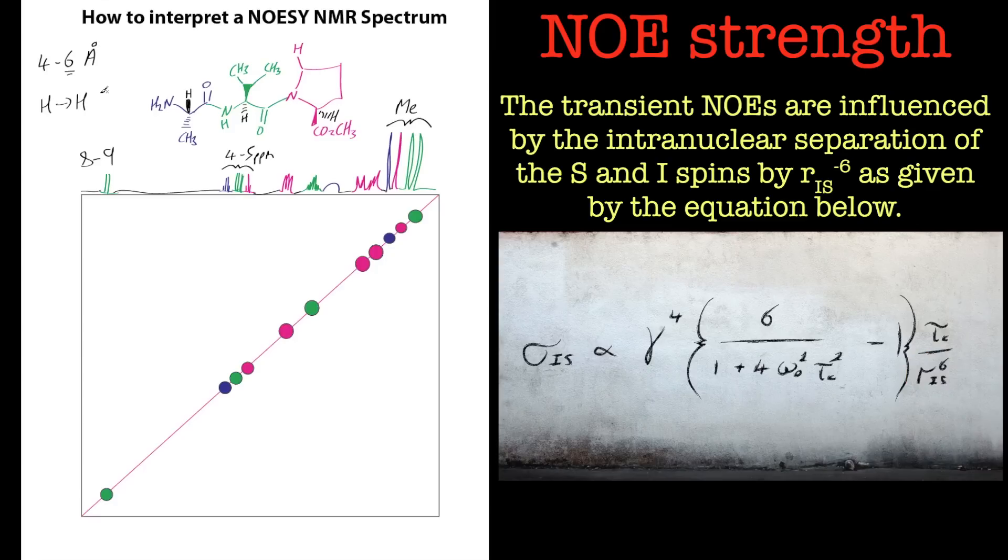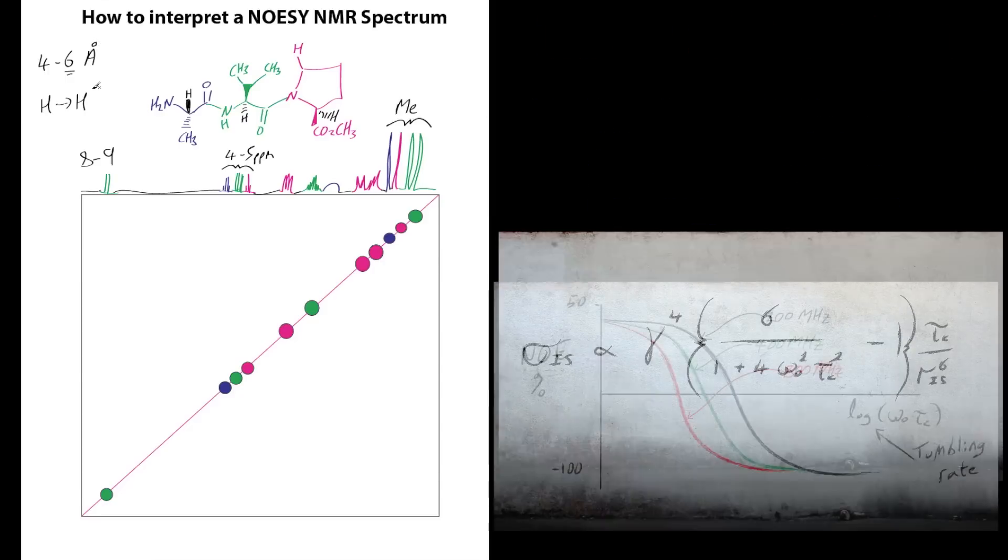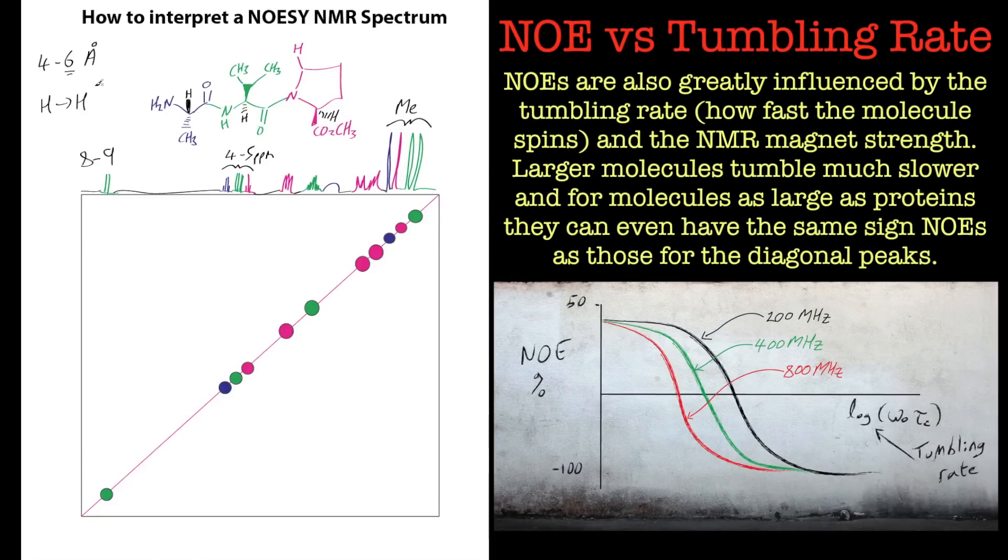For small molecules, I'll put this up at the side as well, the rate at which the molecule tumbles gives rise to a certain color. It's actually the sign of the cross peaks. That's really important because we can see some artifacts if there is a different color. I won't go into that here, I'll go into that in a different tutorial. We just want to be able to interpret this NOESY spectrum.